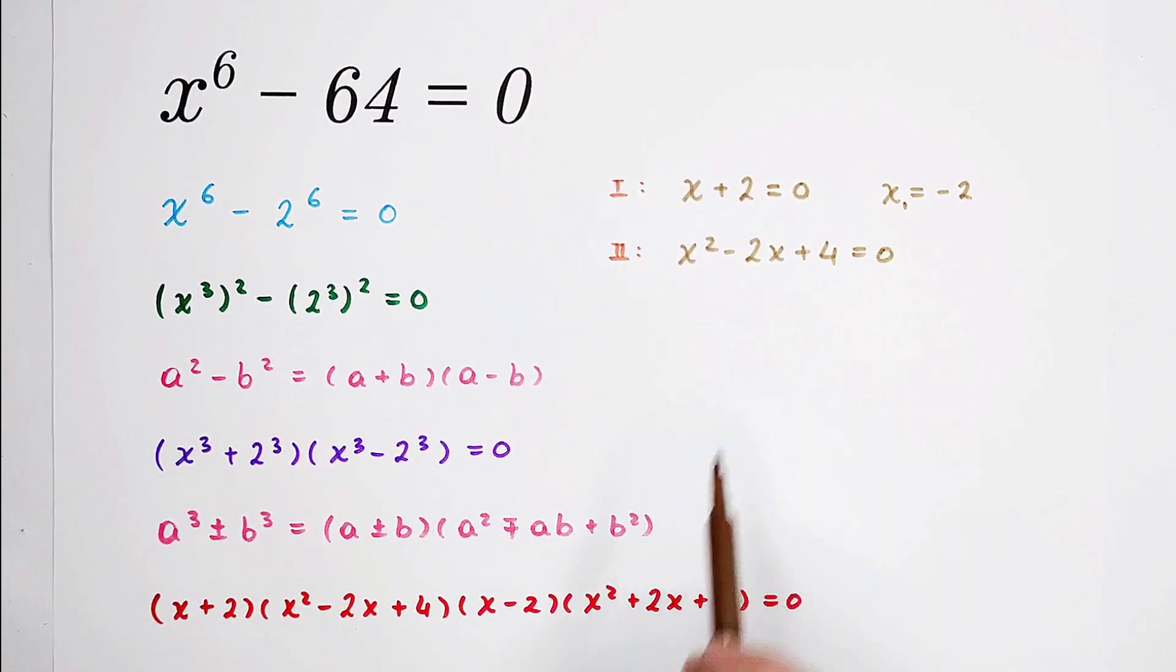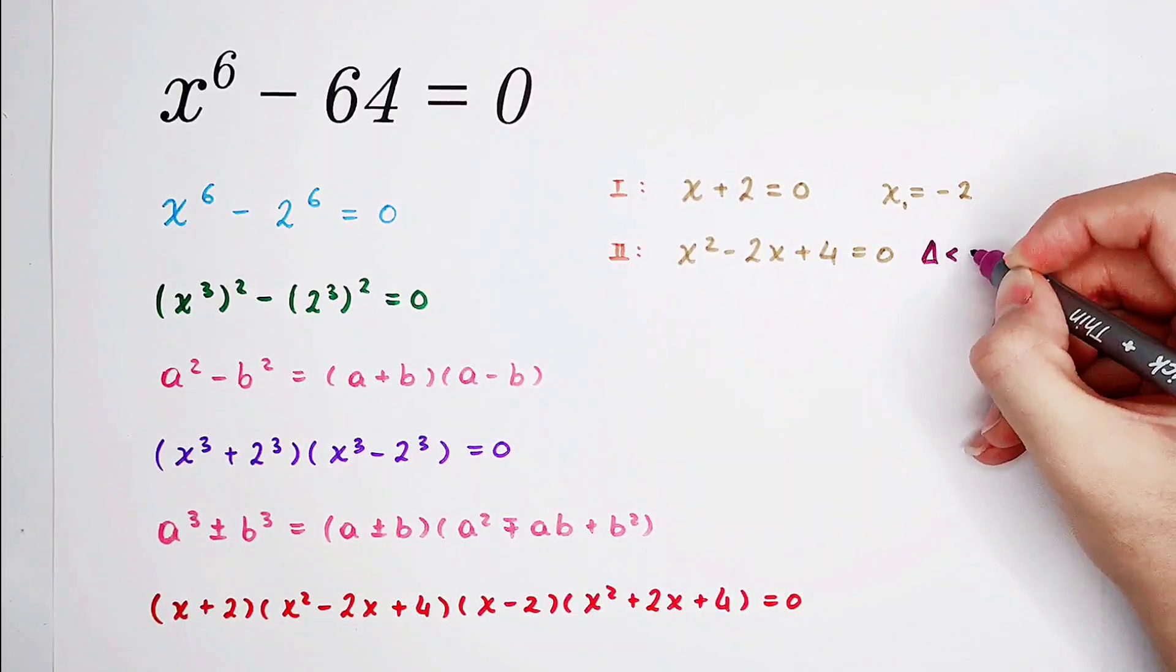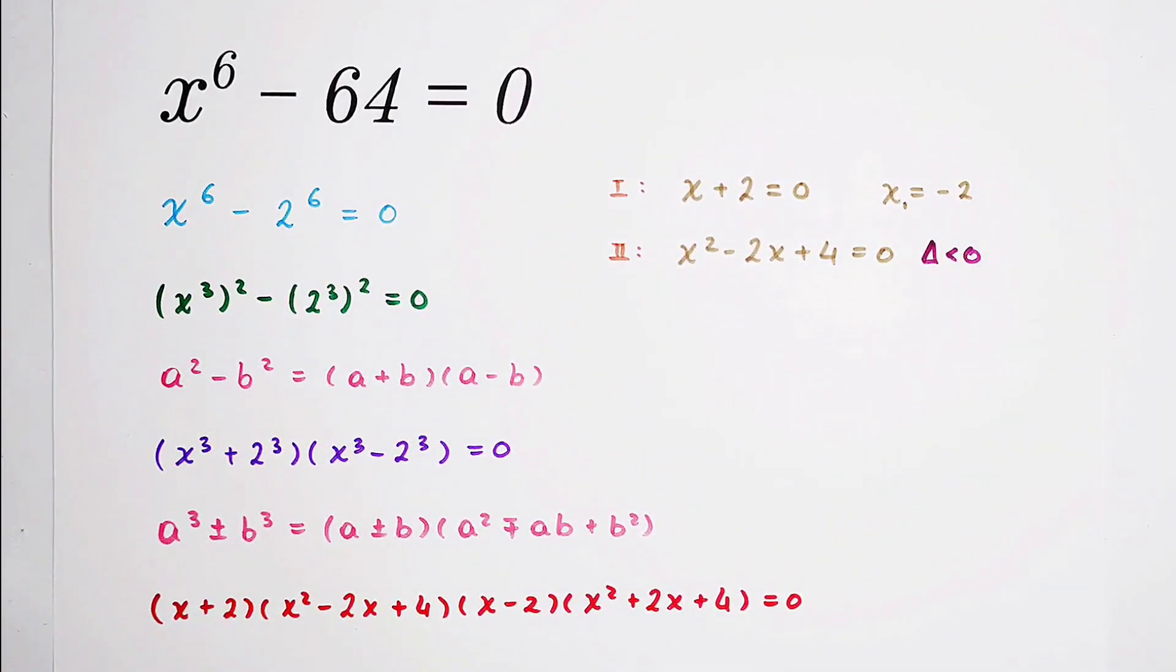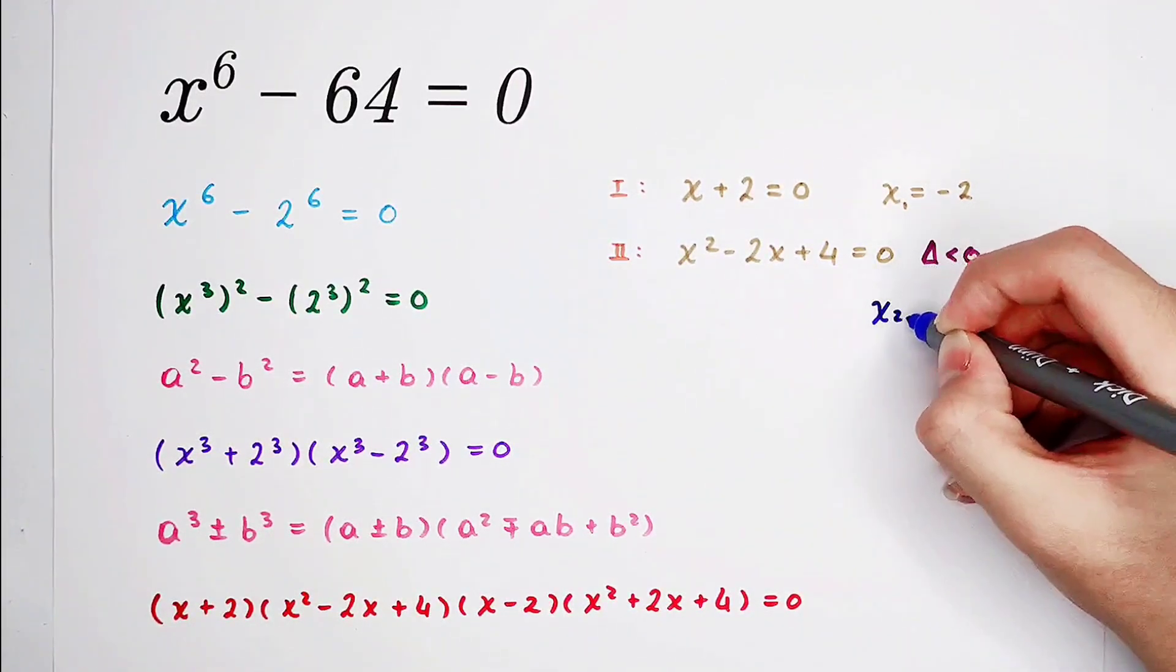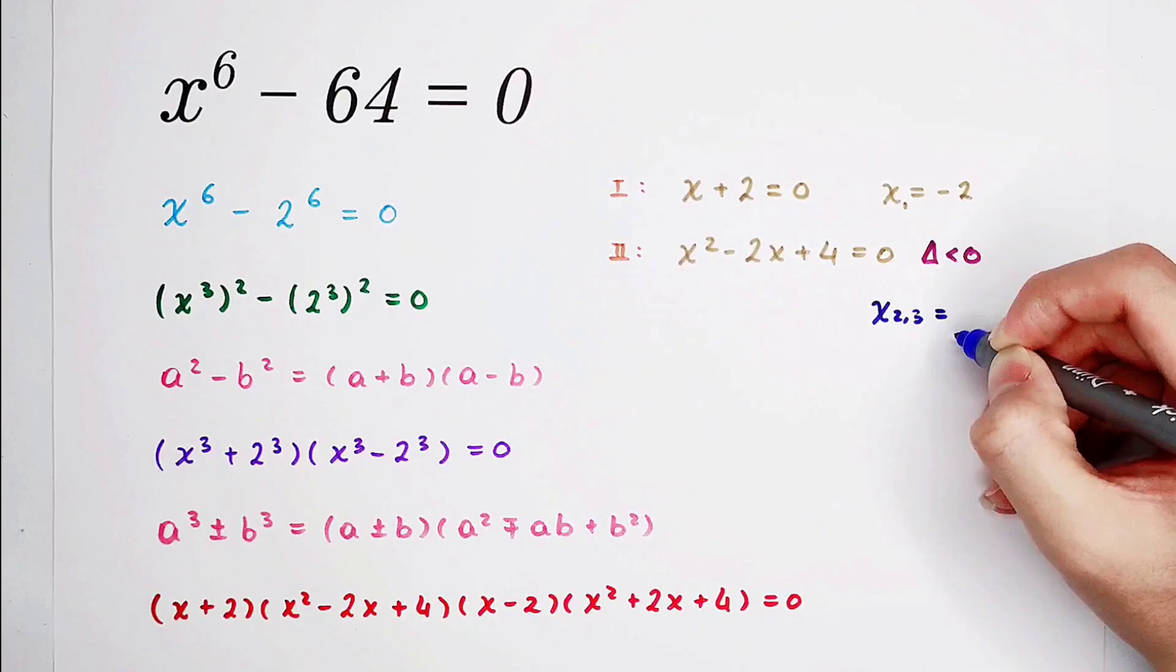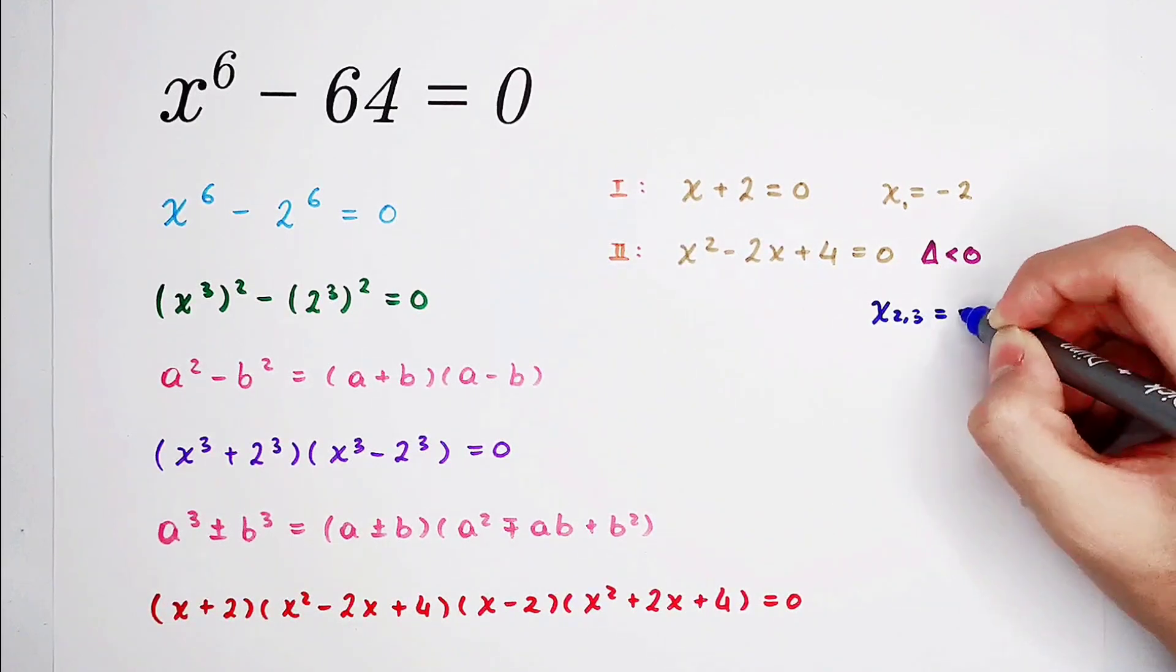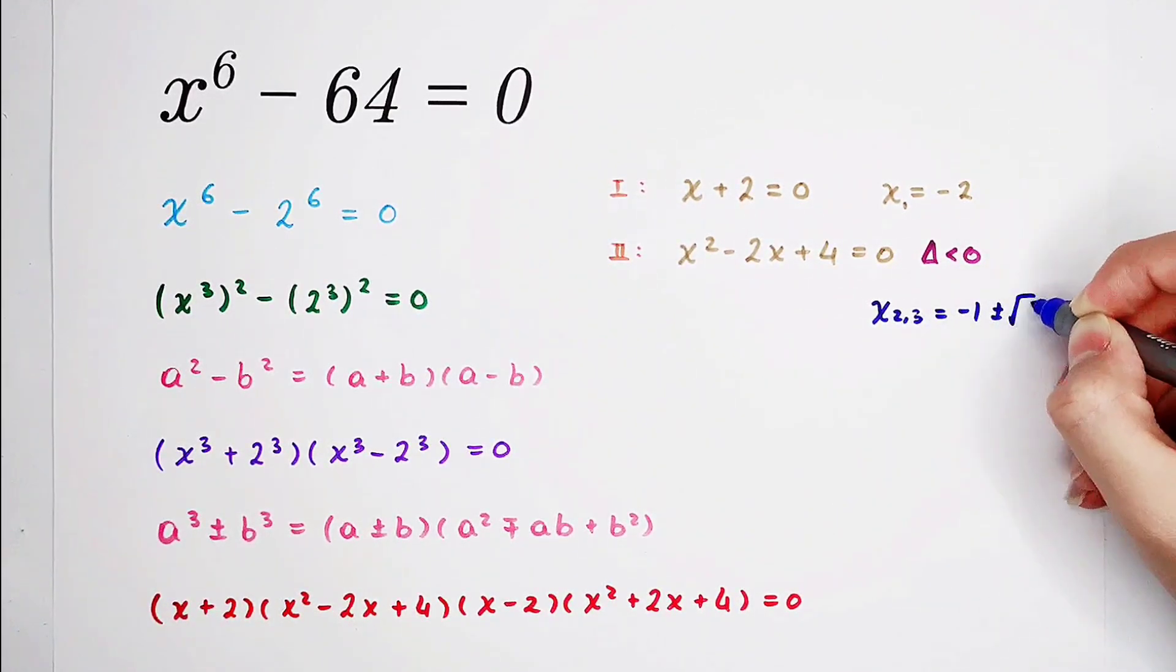So the delta is less than 0. Still, we can solve for this complex root. And we can get x2 and 3 are 1 plus or minus square root of 3 times i.